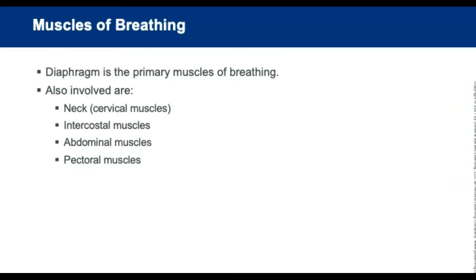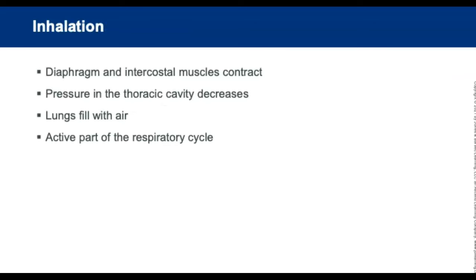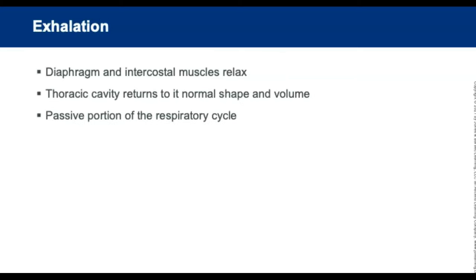The diaphragm is the primary muscle of breathing, containing both voluntary and involuntary muscle. Cervical, intercostal, abdominal, and pectoral muscles also aid in breathing. During inhalation, the diaphragm and intercostal muscles contract, creating a large space in the thoracic cage, decreasing pressure so the lungs fill — this is negative pressure ventilation, an active part of the respiratory cycle requiring energy. Exhalation is passive: the diaphragm and intercostal muscles relax, the thoracic cavity returns to its normal shape, and air flows out with no energy required.